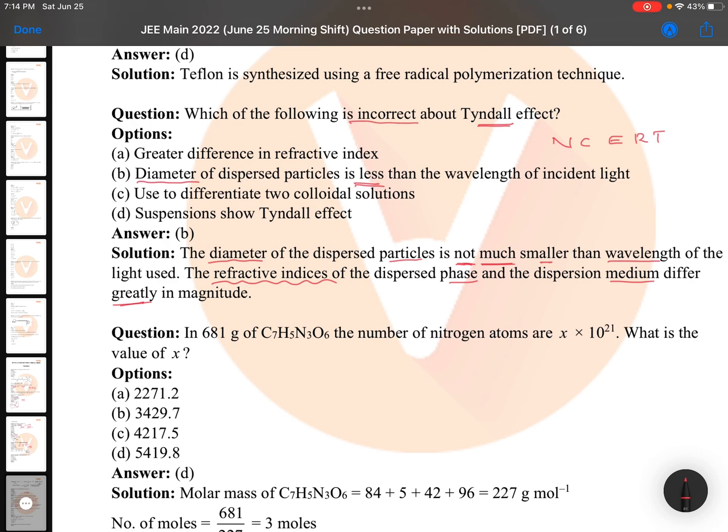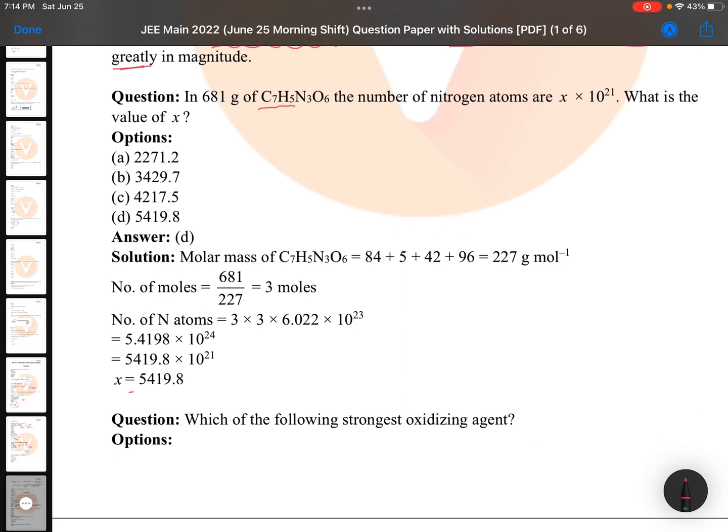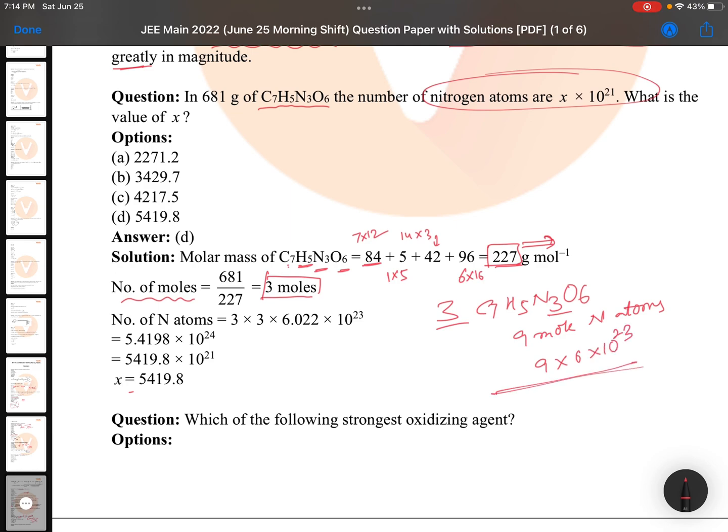C7H5N3O6: One very simple question is asking how many nitrogen atoms are there. First of all, C7H5N3O6 means seven carbons, seven into twelve. Five hydrogens, one into five. Three nitrogens, one into five - three nitrogens are there, 14 into three. Six oxygens, six into sixteen. So you are calculating the molar mass. Once after finding the molar mass you are going with number of moles - number of moles is three moles. Three moles of C7H5N3O6 means three threes are nine mole nitrogen atoms. Nine into six into ten to the power of 23, this is your answer.